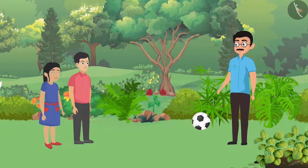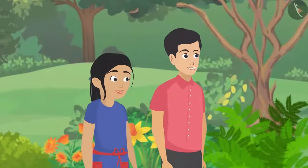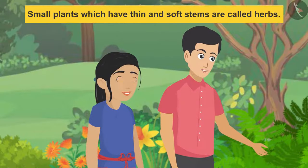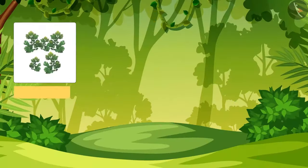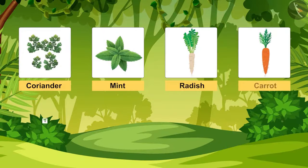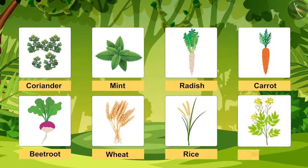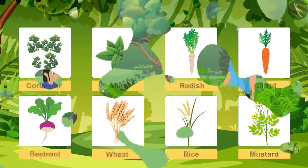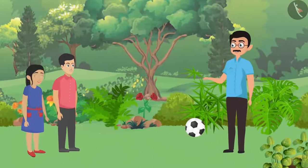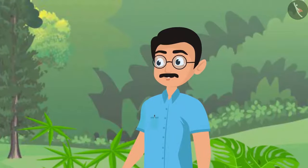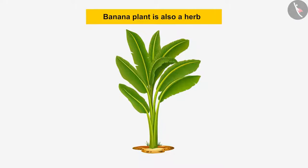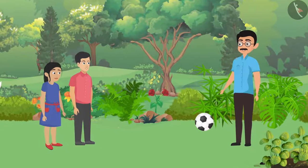Pankaj started with herbs, pointing to small plants which have thin and soft stems. Examples include coriander, mint, radish, carrot, beetroot, rice, and mustard. Father added a fun fact: most herb plants are small, but the banana plant — which is also a herb — is pretty huge. Pushpa was surprised to learn that the banana plant is counted as a herb.